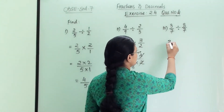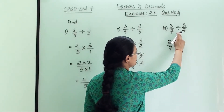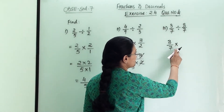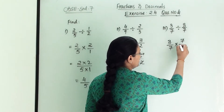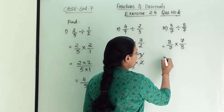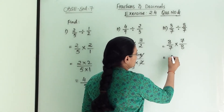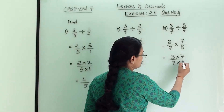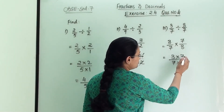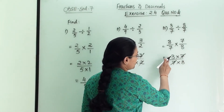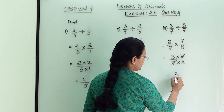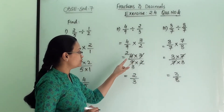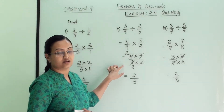The third numerical is 3 by 7 in division with 8 by 7. We convert the division sign into multiplication and write the reciprocal of the second number, giving 7 by 8. So we write 3 into 7 in division with 7 into 8. We can reduce the 7s — 7 ones are 7 — so the answer is 3 by 8, which is again a proper fraction. When we can reduce something at this step we always have to check and reduce.